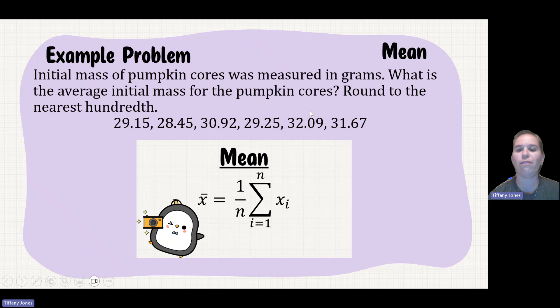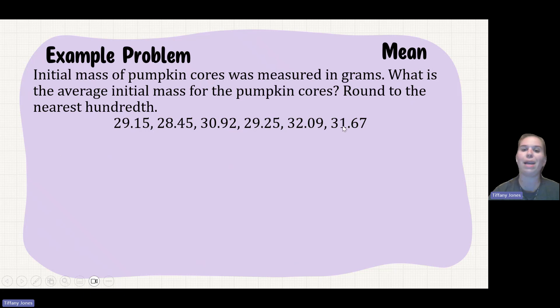They'll usually tell you what we're looking for. Here I'm looking at my 1, 2, 3, 4, 5, 6 different values, so my N is equal to 6. I then sub it into that equation: 1 over 6, six summation, i equals 1, X_i.